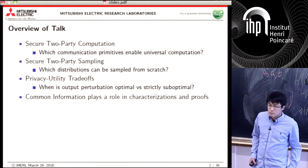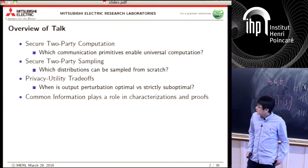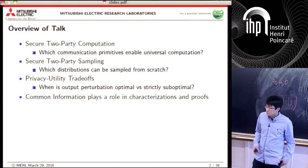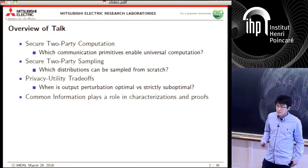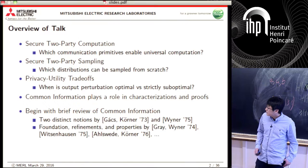In a third problem that's a bit different, we can look at privacy-preserving data release and privacy-utility trade-offs, asking when output perturbation — a class of release mechanisms — is optimal versus strictly suboptimal. Even though these are three very different problems, common information plays a key role in characterizing and answering these problems, and in deriving simple proofs about these results.